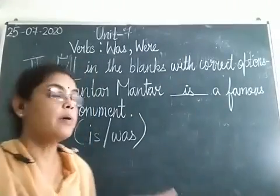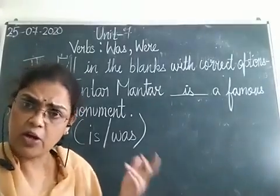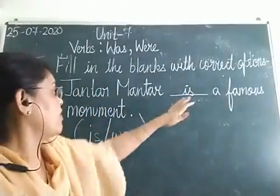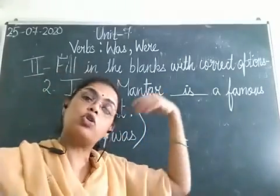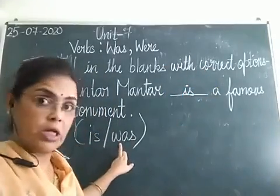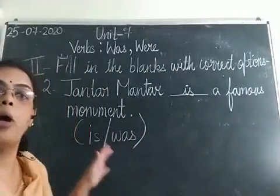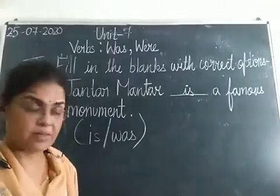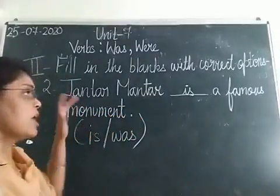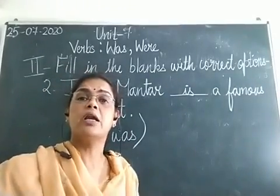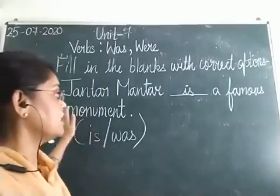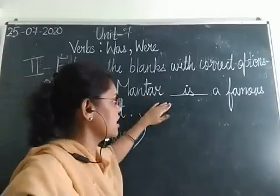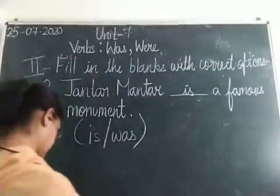If the monument no longer existed, we would write 'was.' But Jantar Mantar is there in Delhi. So we use 'is.' Remember: 'is' is for the present and 'was' is for the past. Both 'is' and 'was' are used with singular nouns and pronouns, but you need to check the tense. Jantar Mantar is a famous monument — we use 'is' because it still exists.